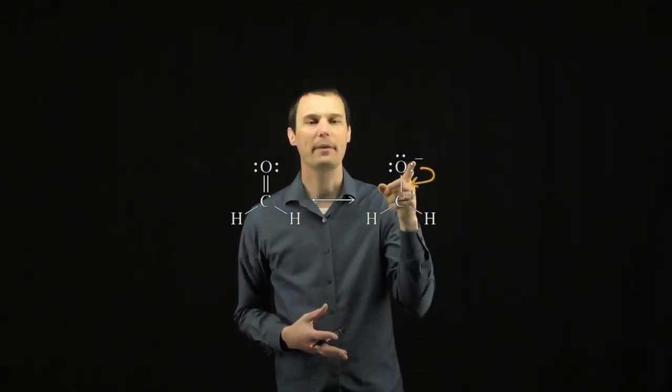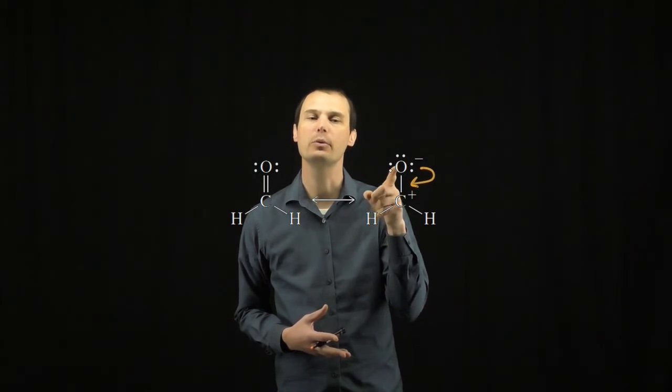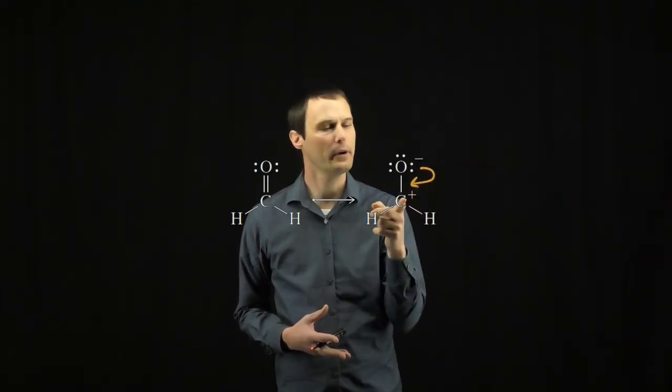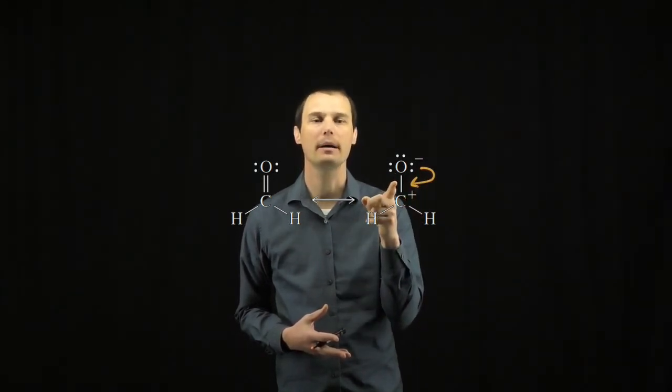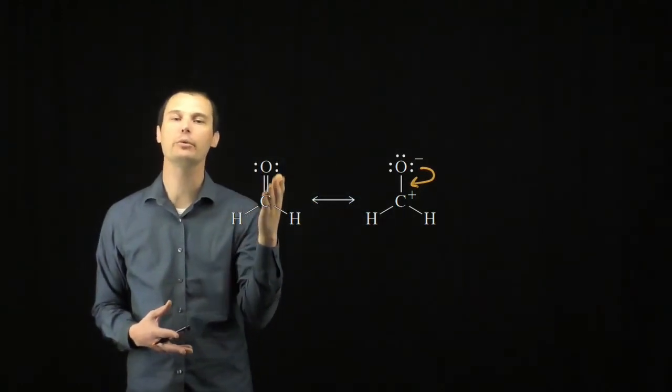We start the arrow at the lone pair and we point the arrow to the bond between the oxygen and carbon. We don't point the arrow to the carbon, we point it to the bond in order to form the new pi bond between carbon and oxygen.